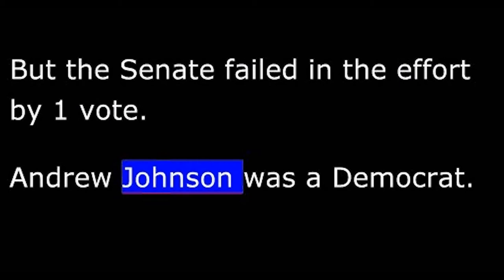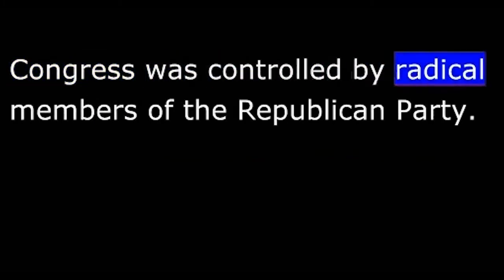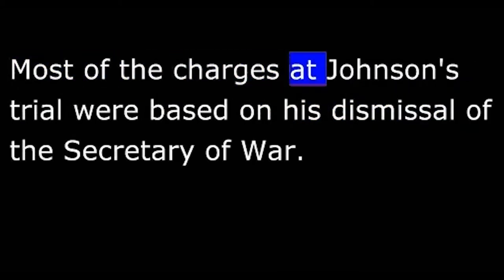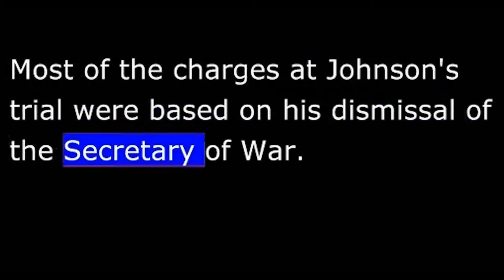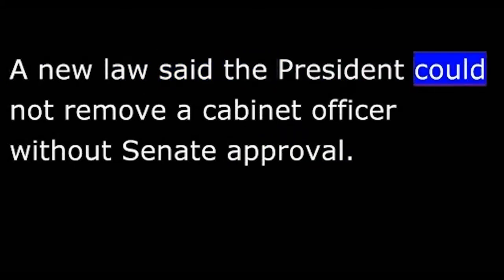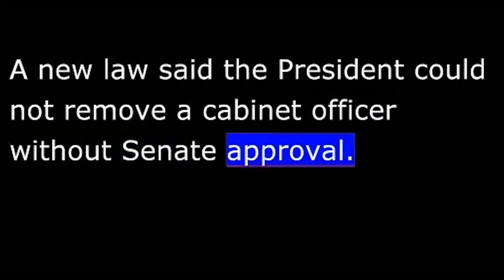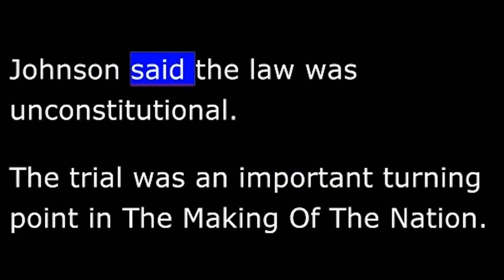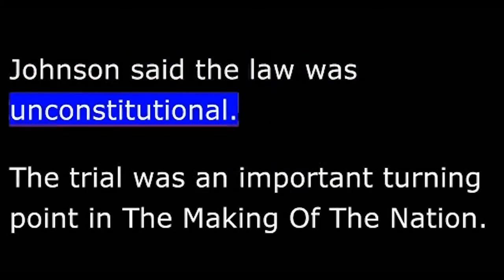Andrew Johnson was a Democrat. Congress was controlled by radical members of the Republican Party. Most of the charges at Johnson's trial were based on his dismissal of the Secretary of War. A new law said the President could not remove a Cabinet officer without Senate approval. Johnson said the law was unconstitutional.